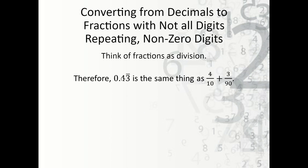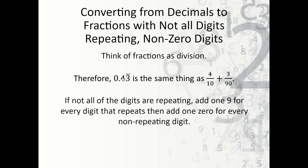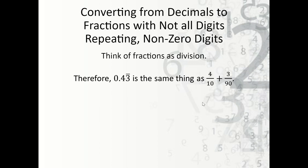Now what if the non-repeating value is not a zero? Take 0.43 repeating. That's the same thing as four over ten plus three over 90 — we treat these parts separately. 0.4 is four over ten. The remaining part is really 0.03 repeating, since we've already accounted for the 0.4. We use our rules to get four over ten for the first part and three over 90 for the repeating part, then add them by finding a common denominator.